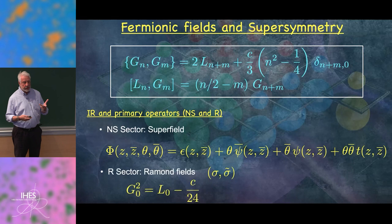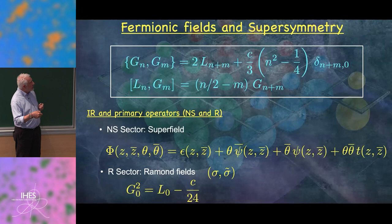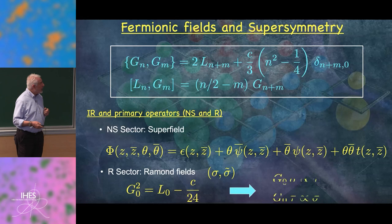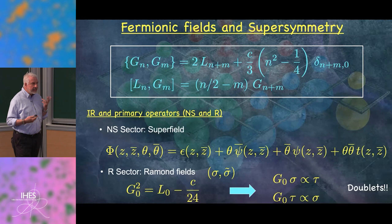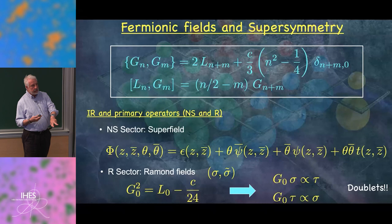In the Ramond sector, G₀² closes to L₀. The fact that the eigenvalues of L₀ are never equal to c/24 in this theory implies that G, when applied to any field, must have a companion, and vice versa. Therefore, the presence of zero modes of fermions necessarily implies that every order parameter is associated to a dual disorder parameter and vice versa.